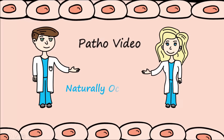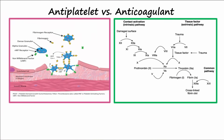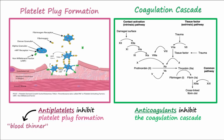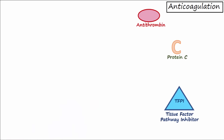Our topic today is the naturally occurring anticoagulants in the body. First, let's remind ourselves of the difference between an antiplatelet and an anticoagulant. Antiplatelets inhibit the activities of platelet plug formation, or make platelets less likely to stick to one another. Another term for antiplatelet is a blood thinner. On the other hand, anticoagulants inhibit clotting factors in the clotting cascade to prevent the formation of a fibrin clot.